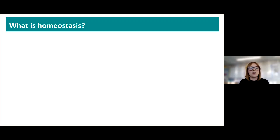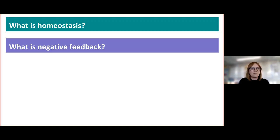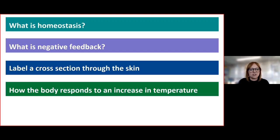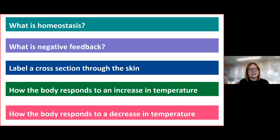The first thing we're going to look at today is homeostasis, then negative feedback — more of a higher tier focus — and how we can link that to temperature regulation. When we look at temperature regulation, one of the things we focus on is a cross-section through the skin. You have to be able to label it and know what each part does in terms of how the body responds to an increase or decrease in temperature.